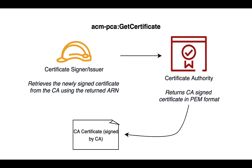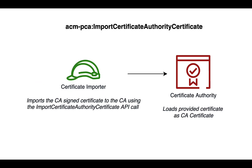The Certificate ARN is used to retrieve the certificate from the certificate authority by the signer and issuer role. This certificate comes down in a PEM format. Last, the import certificate authority certificate command is run by the certificate importer role, which imports the CA signed certificate into the CA using the import certificate authority certificate API call.